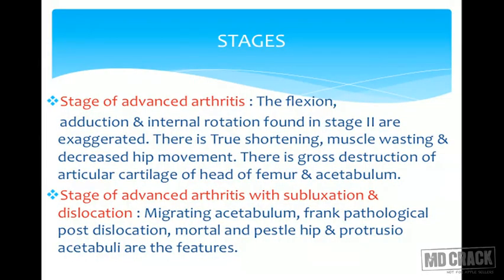In the third and fourth stages — the stage of advanced arthritis — the flexion, adduction, and internal rotation from the previous stage is further exaggerated. Now instead of apparent shortening, it leads to true shortening, with further increase in muscle wasting and decreased hip movement. There is gross destruction of the articular cartilage of the femoral head and the acetabulum. In the fourth stage, subluxation and dislocation occur — including migrating acetabulum, frank pathological posterior dislocation, and mortar and pestle type or protrusio acetabuli.